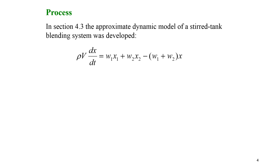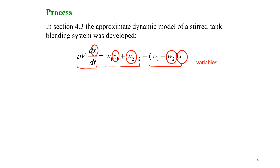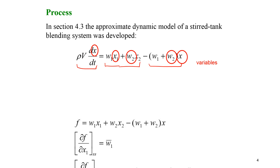We've done this before, but let me review briefly. We start with a species balance for X — our concentration coming out of the reactor. We have our accumulation term, our in terms, and our out terms. Our variables are X, X1, W1, and W2.